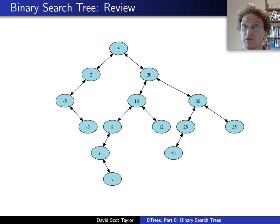So in this case, everything in 5's left sub-tree has a key smaller than 5. Everything in 20's right sub-tree has a key larger than 20. And everything in 10's left sub-tree has a tree smaller than 10. So that's going to hold for any node in the tree.